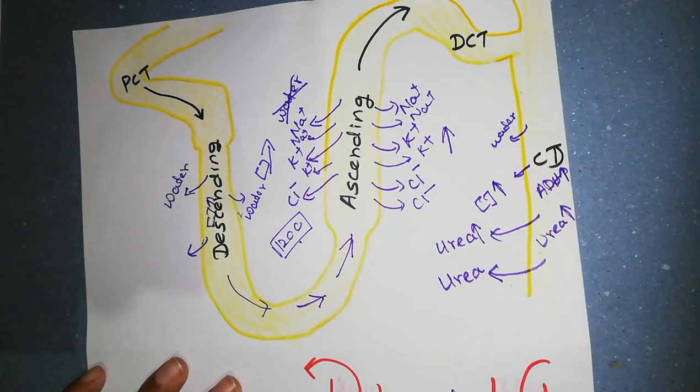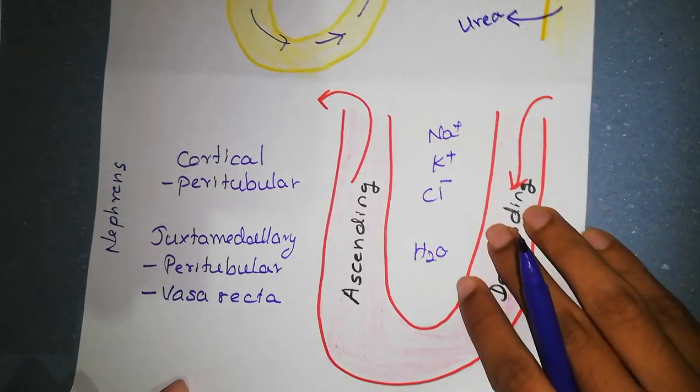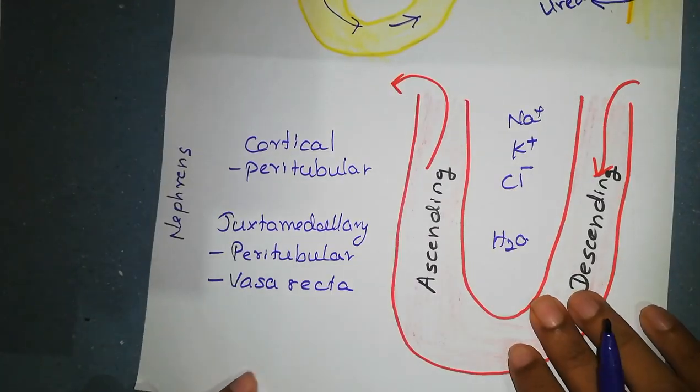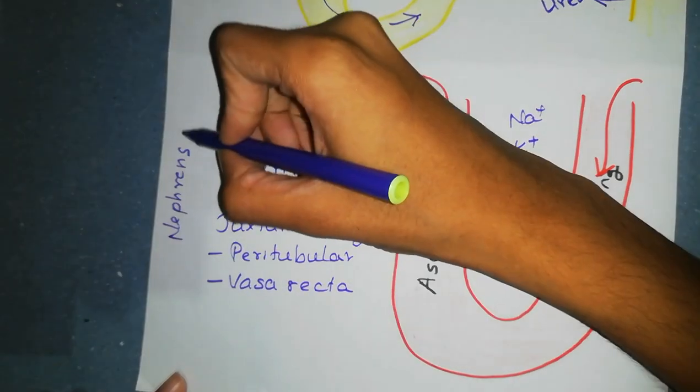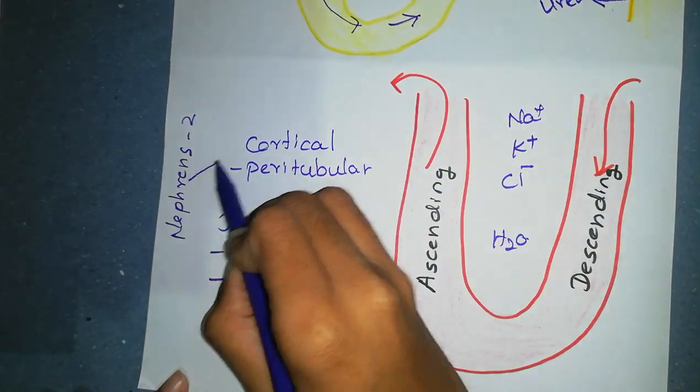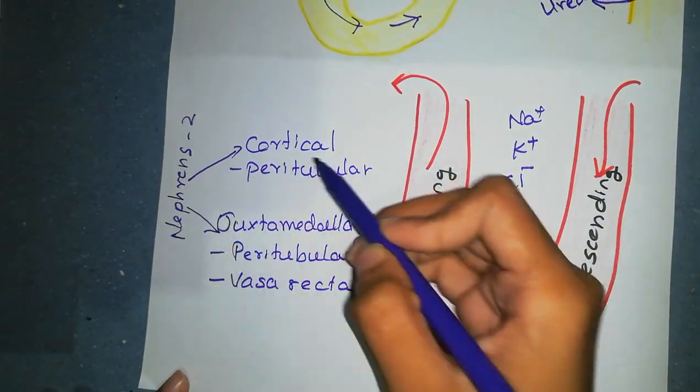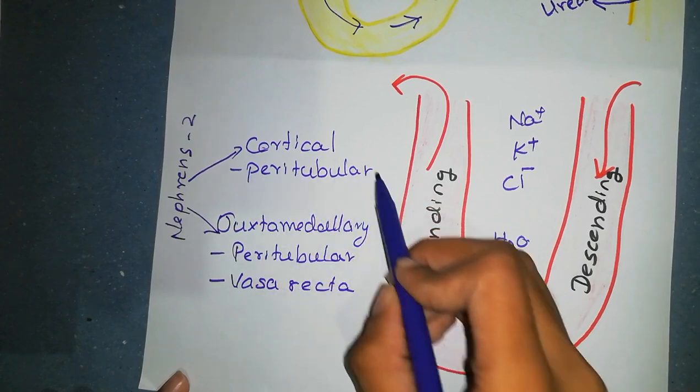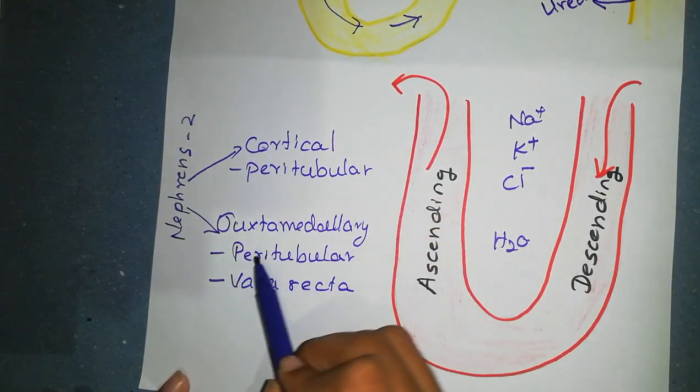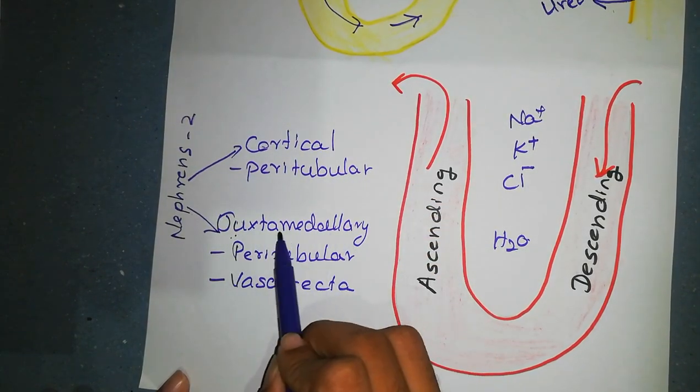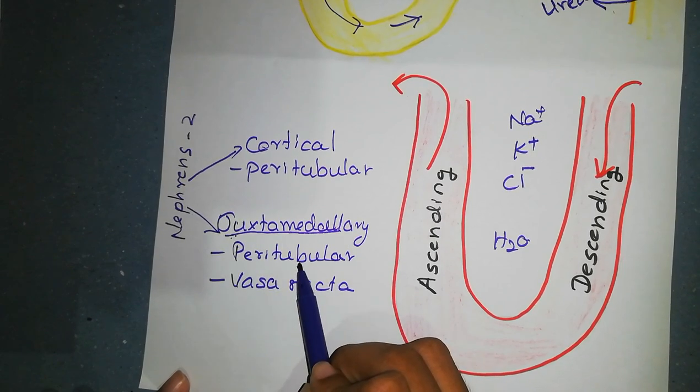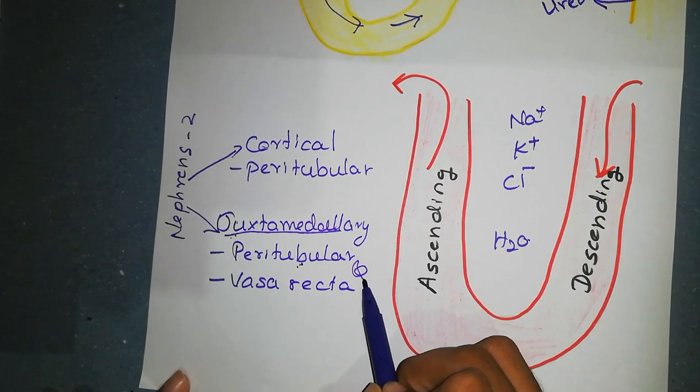Now let's look at the counter current exchangers, vasa recta. You know that there are two types of nephrons: cortical and juxta medullary. Capillaries draining cortical nephrons form peritubular capillaries.